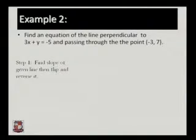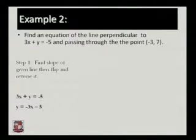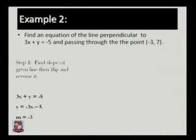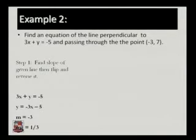Solution: Step 1 — find the slope of the given line 3x plus y equals minus 5. Rearranging gives y equals minus 3x minus 5, which is of the form mx plus c, so M equals minus 3. The slope of the given line is minus 3. The required line is perpendicular to the given line, so the slope of the required line is the opposite reciprocal: opposite sign gives plus, and reciprocal gives 1/3. So the slope of the required line is 1/3.